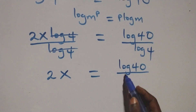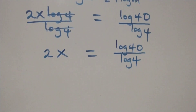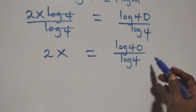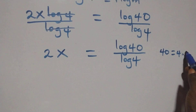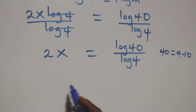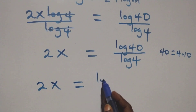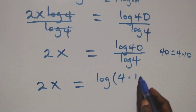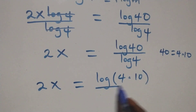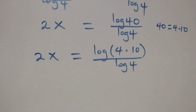The next step: we can write 40 as 4 times 10. Then this equation becomes 2x equals log(4 times 10) over log 4.